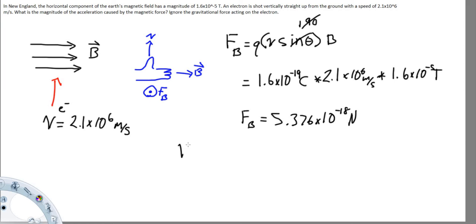So going back to our trusty F is equal to mass times acceleration, we can divide over the mass so it will be acceleration is equal to F divided by m, the mass of the electron.